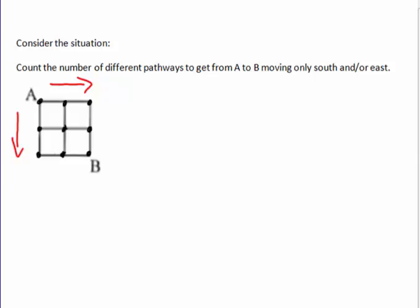If we wanted to get from A to B, one path we could take is south, south, then east and east. Another potential path is south, then east, east, south. If we keep looking at these paths, we can see there's a variety of ways we can get there.